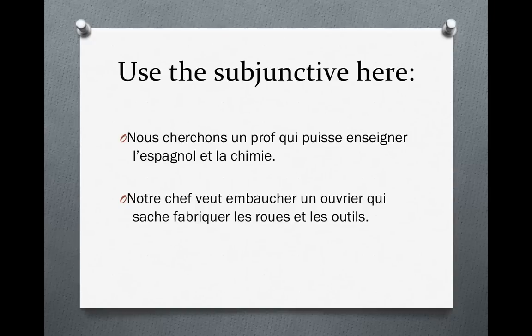Regardons la prochaine phrase. Notre chef veut embaucher un ouvrier qui sache fabriquer les roues et les outils. Our boss wants to hire a worker who knows how to make wheels and tools. Our boss doesn't really know if that person exists or is going to show up and be hired. There is an element of doubt, so we use the subjunctive.